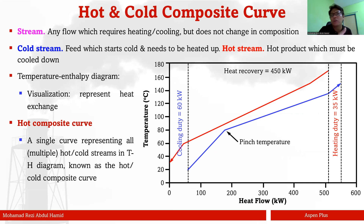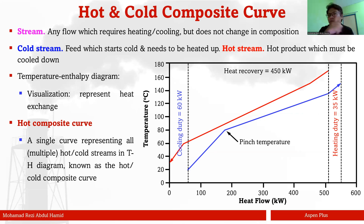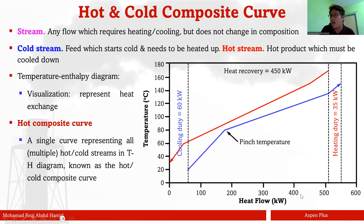When we talk about hot and cold composite curves, they are drawn on a TH diagram — basically a temperature-enthalpy diagram. This is a plot with temperature on the y-axis, which can be in Kelvin, Celsius, or any unit. On the x-axis is heat flow, in kilowatts, BTU per second, BTU per hour, kilojoules per hour, or whatever unit of heat or energy you want to represent.